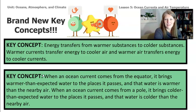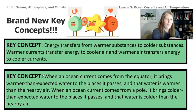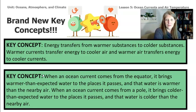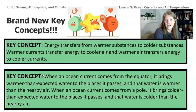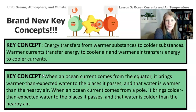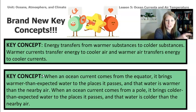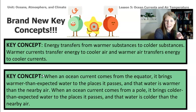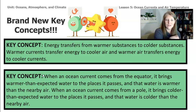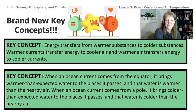The second new key concept is that when an ocean current comes from the equator, it brings warmer than expected water to the places it passes, and the water is warmer than the nearby air. When the ocean current comes from the pole, it brings colder than expected water to the places it passes, and the water is colder than the nearby air.